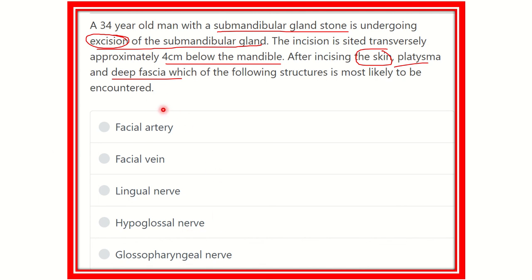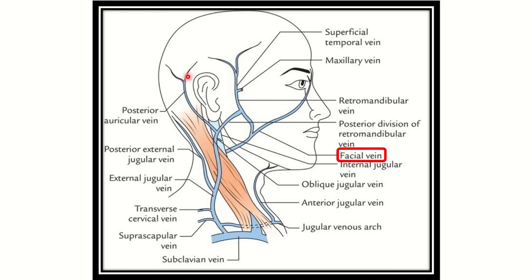We have to find out which structure is located at this place. Here we can see the different structures in relation to the submandibular gland. We know the submandibular gland is located in this region, and 4 cm below — in this area — a transverse incision is given. After removing the skin, superficial fascia, platysma muscle, and deep fascia, a vein is located. We can see this vein is the facial vein, and there is a chance of encountering this facial vein.